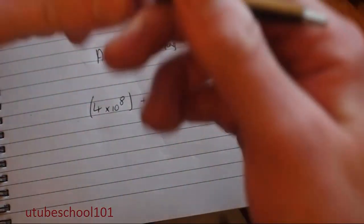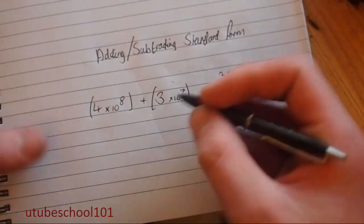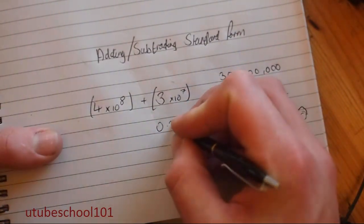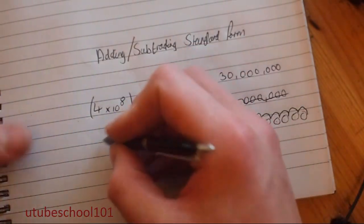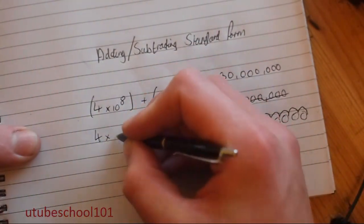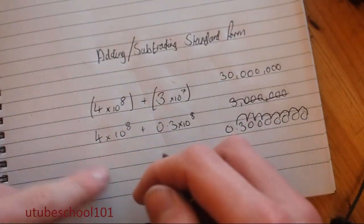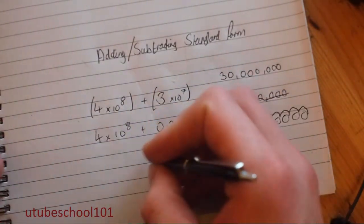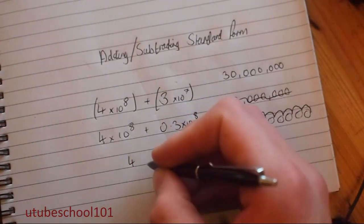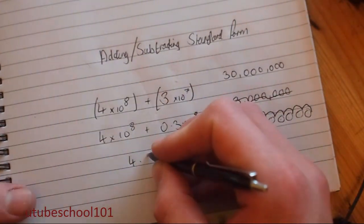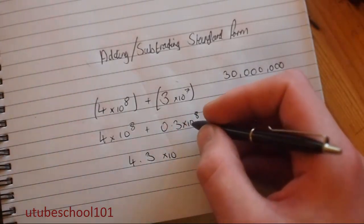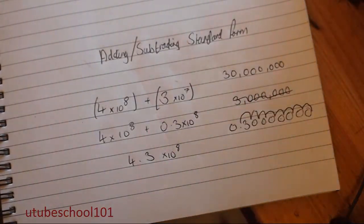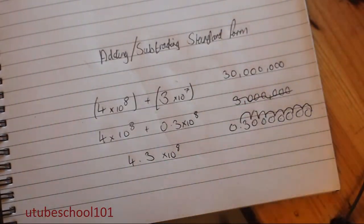So we're now back to our thing. What we are going to do is make this to the power of eight, so it's going to be zero point three times ten to the power of eight. And then we'll just remove this from the brackets, ten to the power of eight, and then we'll simply add these two numbers. So we'll add four and zero point three to form four point three, and then these will stay the same. So four point three to the power of eight, and that's the correct answer.